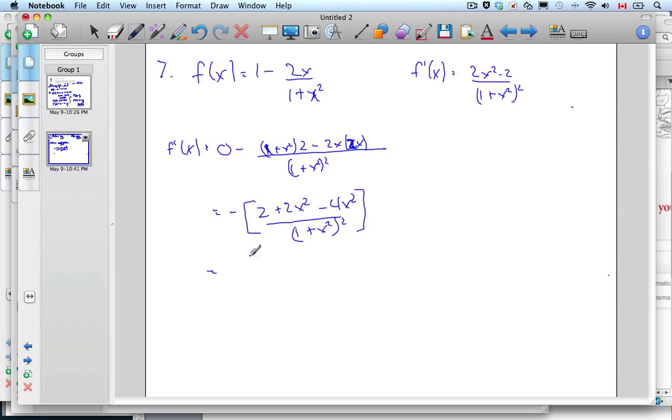Which simplifies to (-2 - 2x²)/(1 + x²)². Distributing the negative sign, I get (2x² - 2)/(1 + x²)². And I've shown it's true.